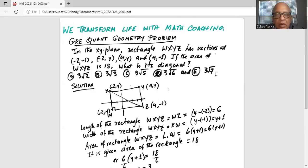So I have plotted the points. W is at (-2, -1), the point W with x-coordinate -2 and y-coordinate -1, then X at (-2, y) with x-coordinate -2 and y-coordinate y.